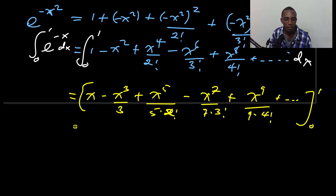So this is going to be, if I put in the upper limit, that's 1 minus 1 over 3 plus 1 over 5 times 2 factorial. That's 5 times 2, which is 10. Minus 1 over 7 times 3 factorial is 6, so that's 42.